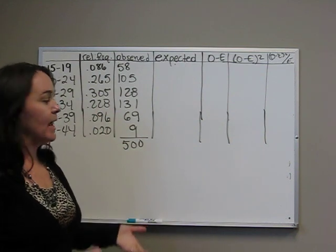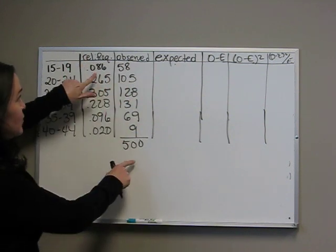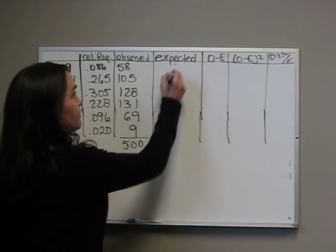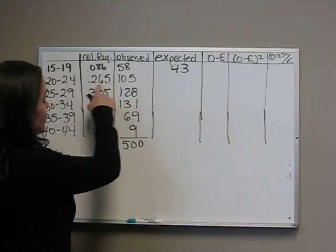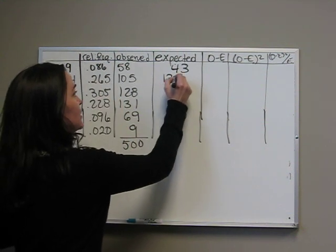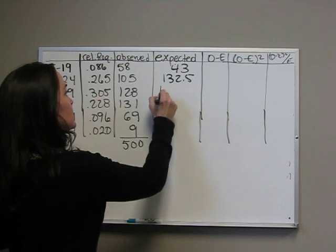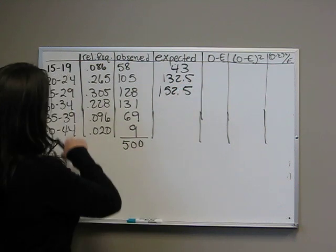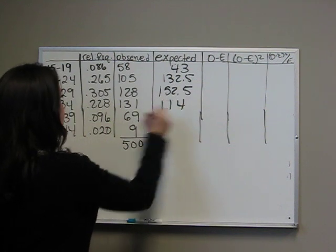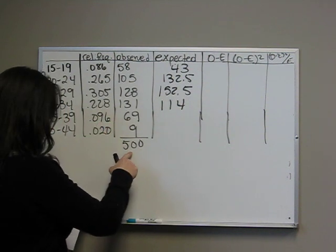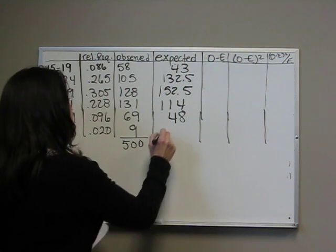We're just trying to figure out how many out of the 500 would we expect to be 15 to 19 years of age. So we say .086 times 500, and we get 43. .265 times 500 is 132.5. .305 times 500 is 152.5. .228 times 500 is 114. .096 times 500 is 48. And .02 times 500 is 10.